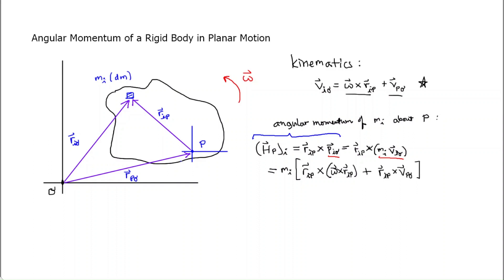For rigid body motion — in terms of forces, moments, kinetic energies, and other things — it is not uncommon to run into this triple cross product, and we often resolve that using what we call the back-cab rule. I have a video on the back-cab rule. What that means here is that we take omega and multiply by the dot product r_ip · r_ip, and then minus r_ip times the dot product r_ip · omega. For planar motions...